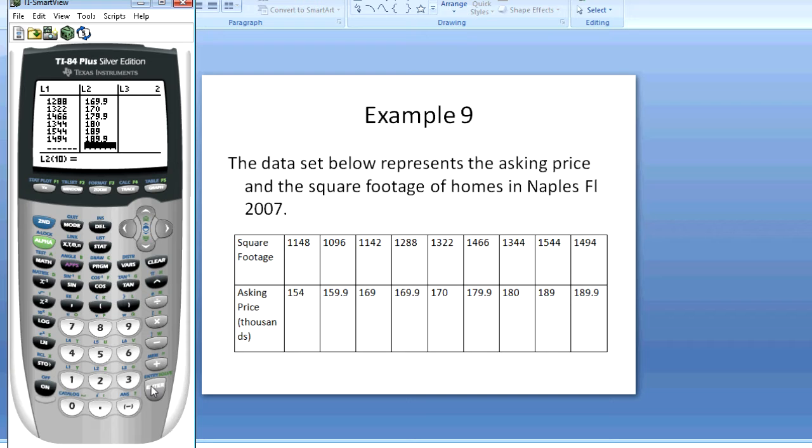Once all your data is in all you have to do is go to stat, calc, and then number four linear regression. This can actually give us everything we need for a linear regression analysis at least at this stage. It gives you your slope A, your Y intercept B, R squared which is your coefficient of determination and R which is your correlation coefficient.